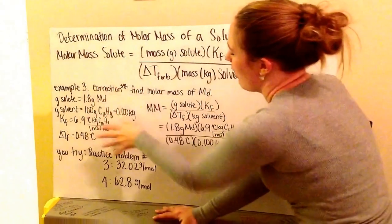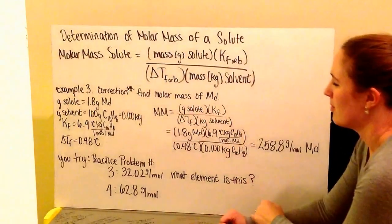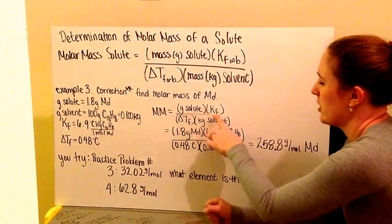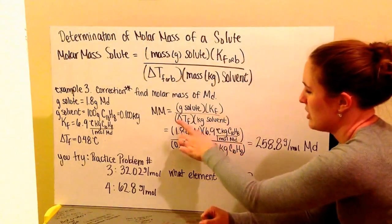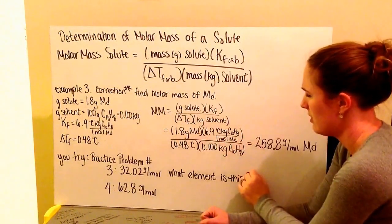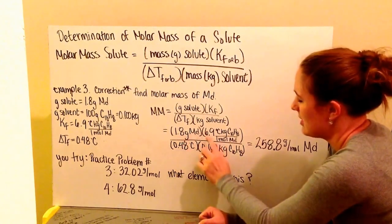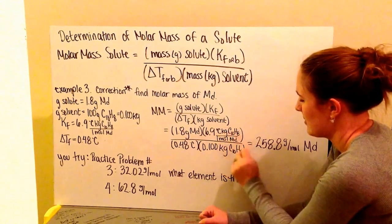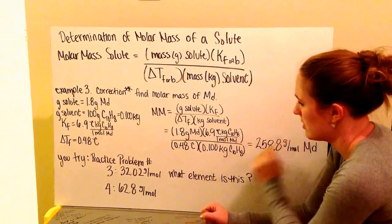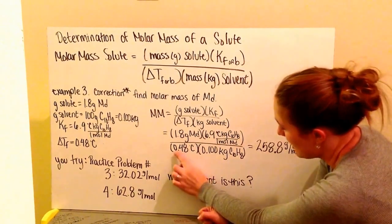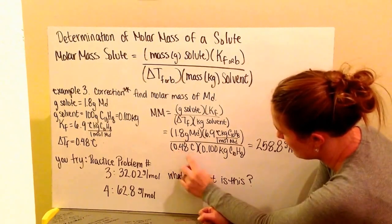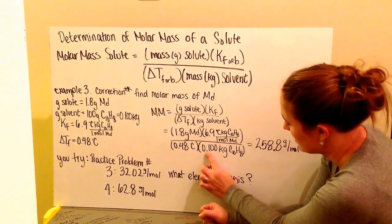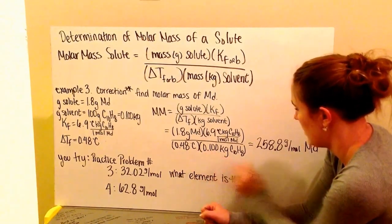I plug in all these values into my molar mass equation: gram solute times Kf divided by change in temperature times kilograms of solvent. So I have 1.8 grams of Md times 6.9 Kf degrees Celsius kilograms naphthalene divided by one mole of solute, divided by 0.48 degrees Celsius times 0.1 kilograms of naphthalene.